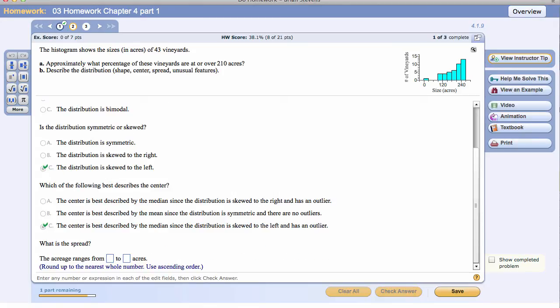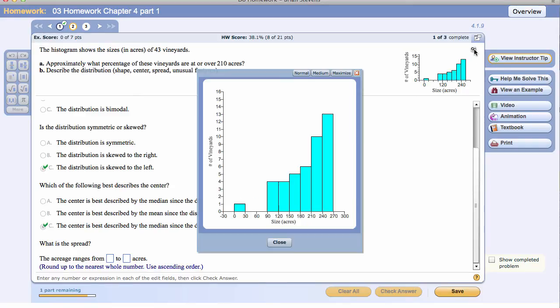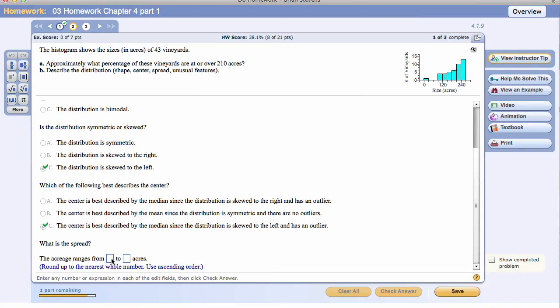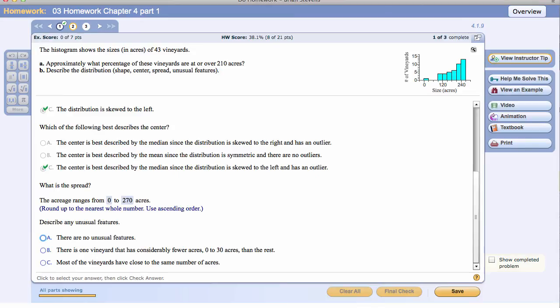What is the spread of the data? And we can see it goes from down about zero right here all the way to 270. Zero to 270. Describe any unusual features. Basically, this outlier right here is maybe the unusual feature. It is, but not too unusual. It's just a strong left skewed distribution, but we will go ahead and say the outlier is the unusual feature.